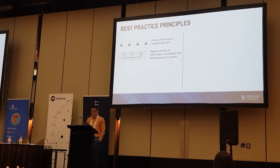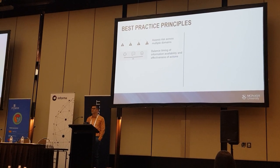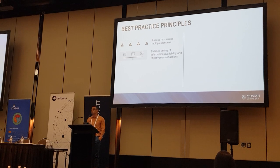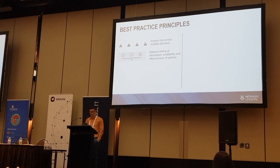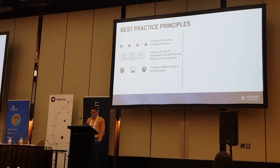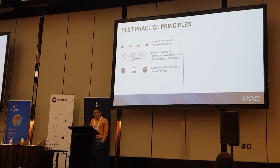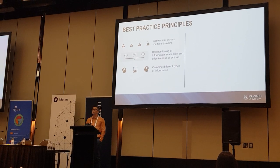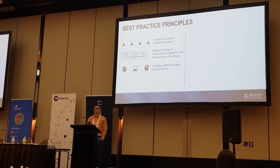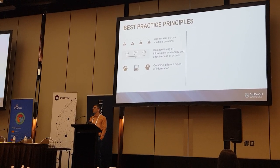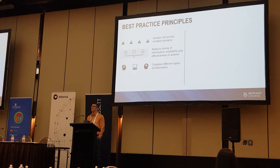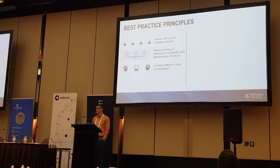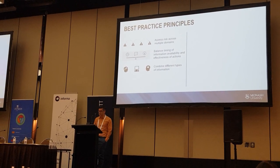You need to balance the timing of information availability and the effectiveness of actions. You need to combine different types of information. There'll be information that's important that's available on a claim form, and there's information that's important that you get directly from the injured worker. You need a system that's going to be able to combine those appropriately.